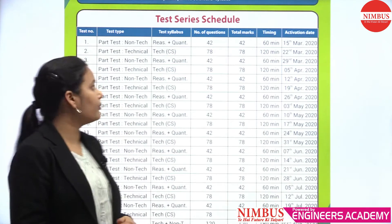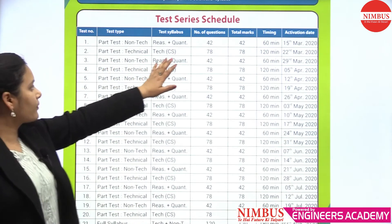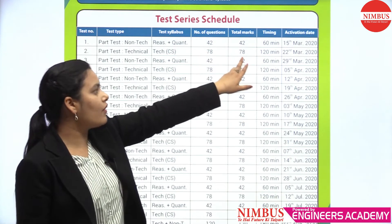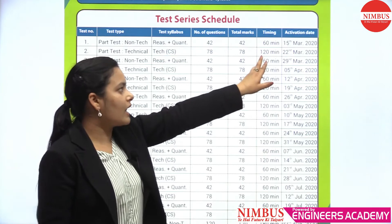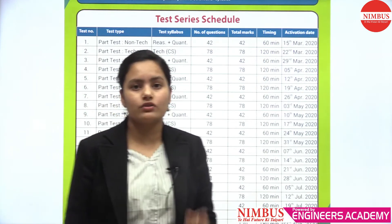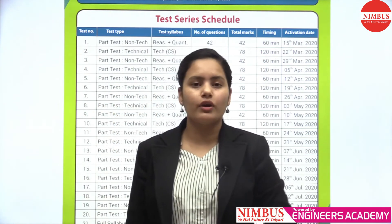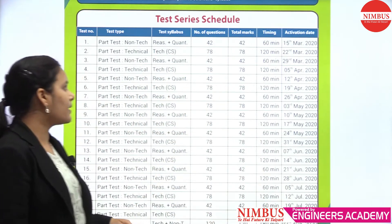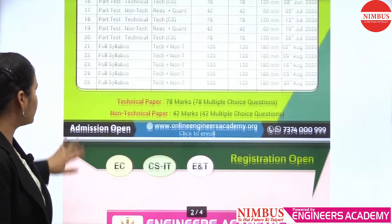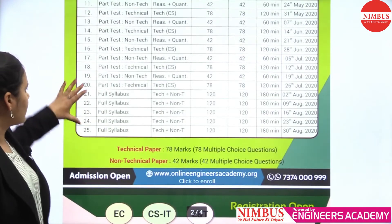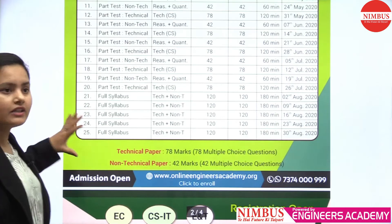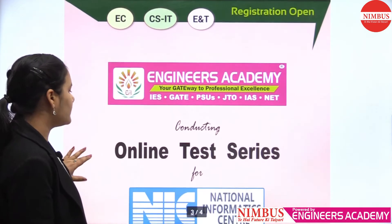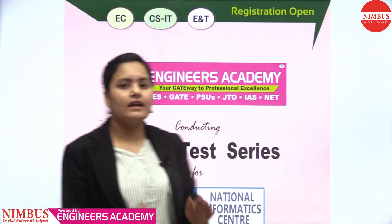The second test will be the technical test, having 78 questions of 78 marks and the time will be 120 minutes. In 120 minutes, you have to attempt all these questions. This is exactly on the same pattern of the exam. You can see there are 25 tests and the last 5 tests are the full-length tests. You can practice better and improve your scores in the exam.